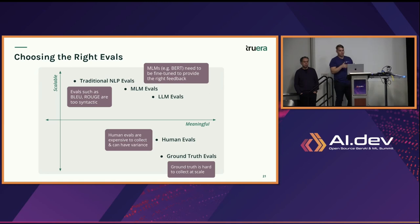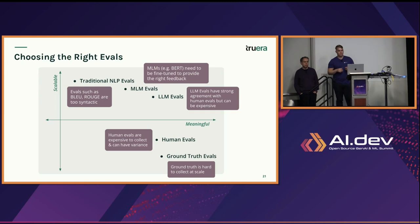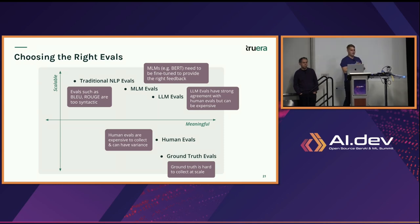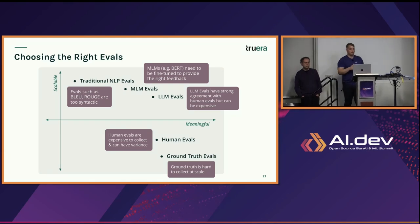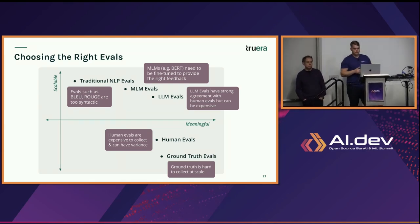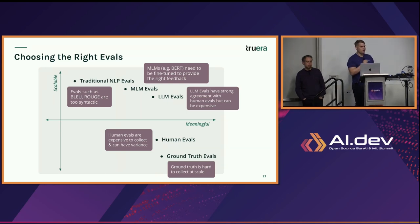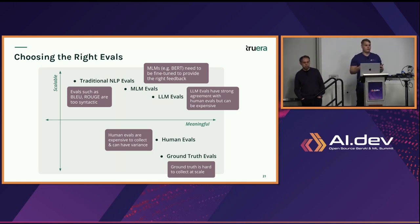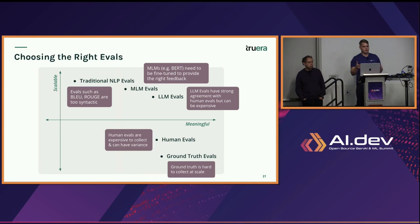From there, a lot of teams turn to traditional NLP evals like BLEU and ROUGE. But these are really syntactic — they rely on word overlap and fail to capture nuance. Then we have medium language model (MLM) and large language model-based evaluations. Medium language models like BERT can be fine-tuned to provide the right feedback; you can train smaller models on domain-specific evaluation metrics like groundedness or relevance — a really cost-effective way to get that metric. And large language model evaluations are nice because you can evaluate anything you can prompt: 'How toxic is this response?' — an automated way to get that evaluation.